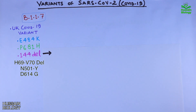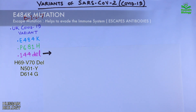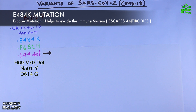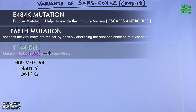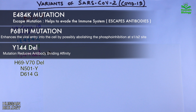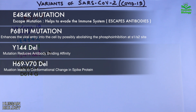The E484K mutation is an escape mutation because it helps the virus evade the immune system. The P681H mutation enhances viral entry into the cell by possibly abolishing phosphor inhibition at the S1/S2 site. The Y144 deletion reduces antibody binding. The H69/V70 deletion results in a conformational change in the spike protein.